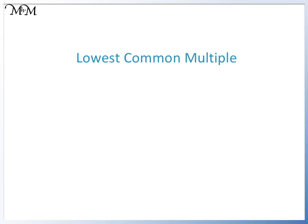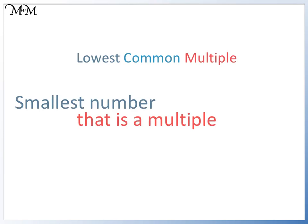Hi and welcome to our lesson on finding the lowest common multiple. The lowest common multiple is the smallest number that is a multiple of both given numbers.